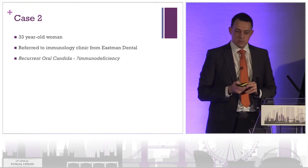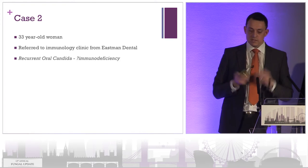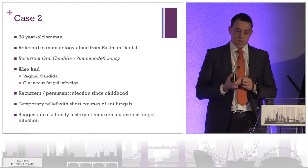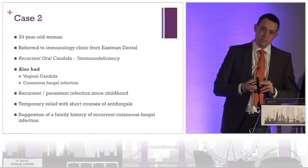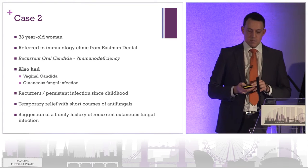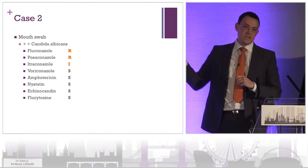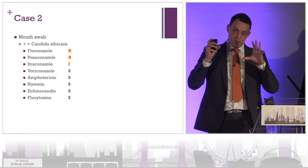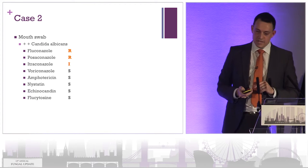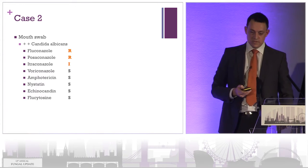Case number two is a 33-year-old woman referred to us in the immunology clinic from the Eastman Dental Hospital because of recurrent oral candida — does she have an immunodeficiency? It turns out she also has vaginal candidiasis and cutaneous fungal infection, which has been recurrent or persistent since childhood with temporary relief with antifungals. There's a suggestion through her family history of other family members affected by fungal infection. In line with her previous treatment, she's developed some azole resistance along the way.